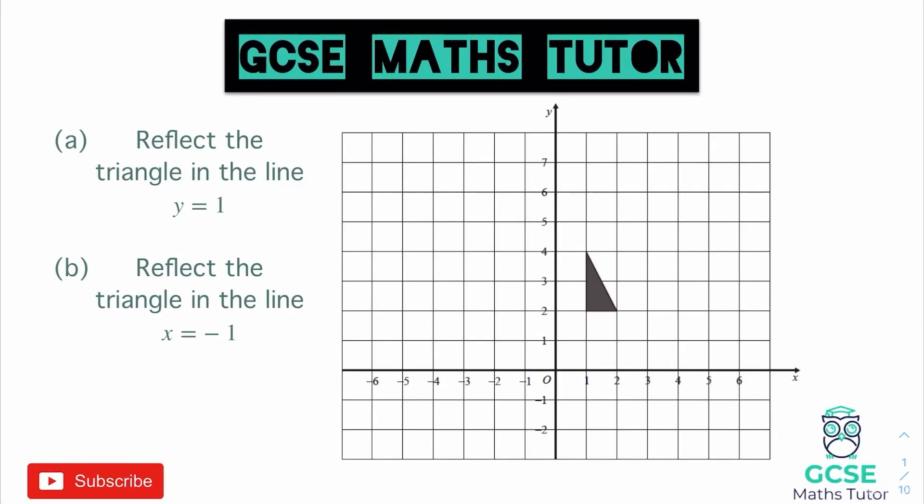In order to understand a reflection, we have to understand how to find the lines in order to reflect it. We've got two questions here and we're going to do them both on the same grid. Grab a piece of paper, grab a pen, make some notes, because we just need a few notes on this in order to find the actual reflection lines. It says here, reflect the triangle in the line — and the first line we've been given is y equals 1.